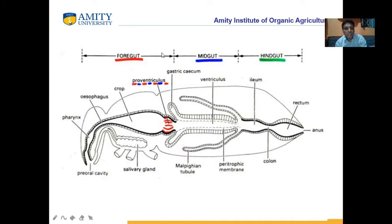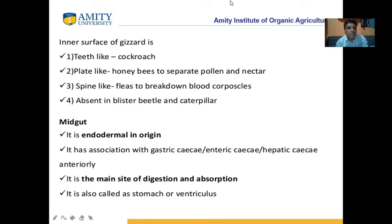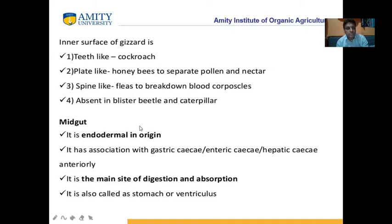The insect digestive system is distributed in three regions: foregut, midgut or mesenteron, and hindgut. Regarding the gizzard: teeth-like structure is found in cockroach, plate-like structure in honeybee, and spine-like structure in fleas. These spines are absent in blister beetle and caterpillar.